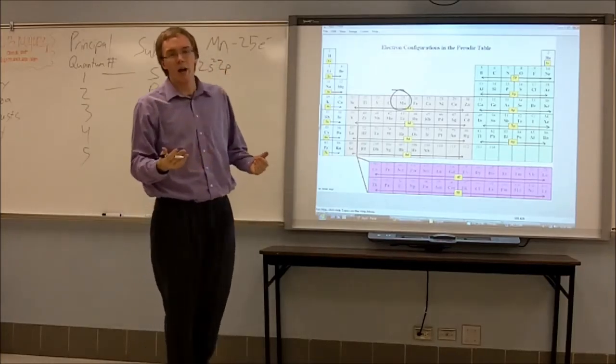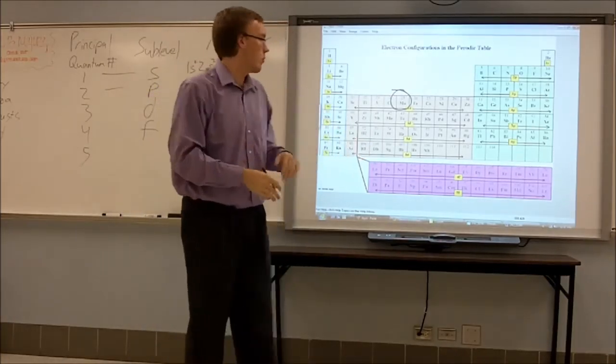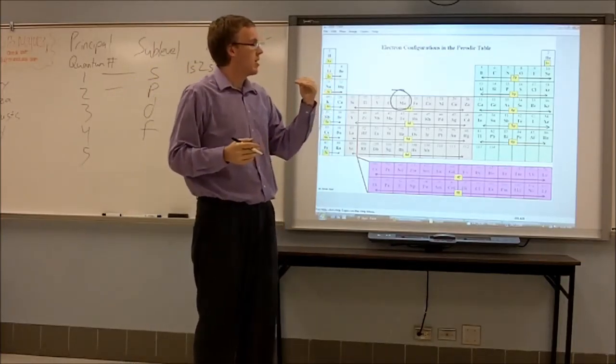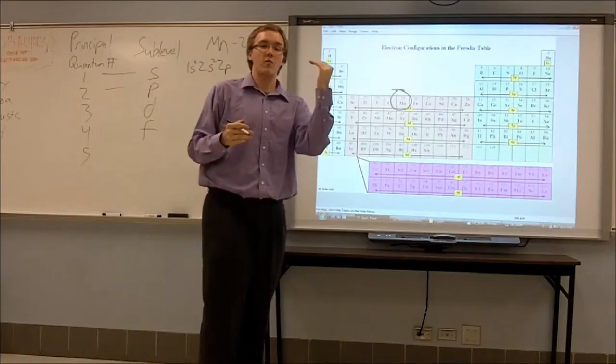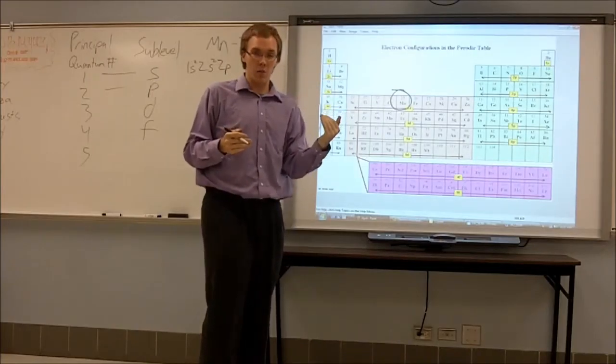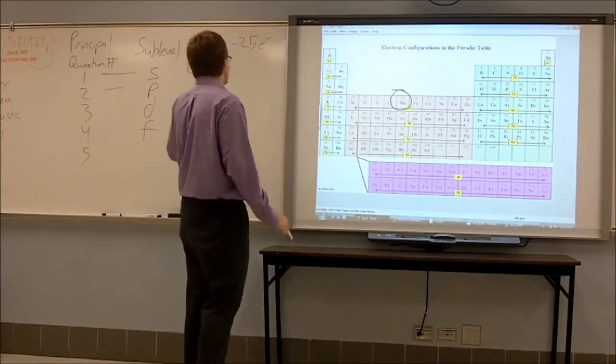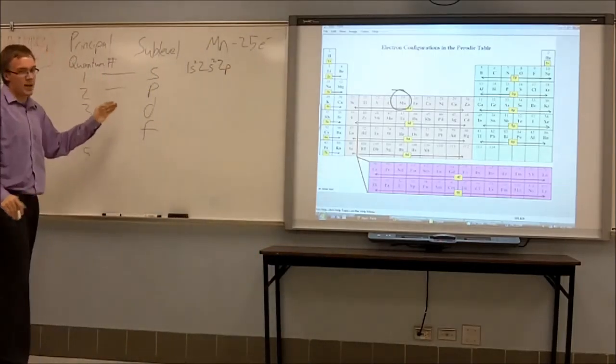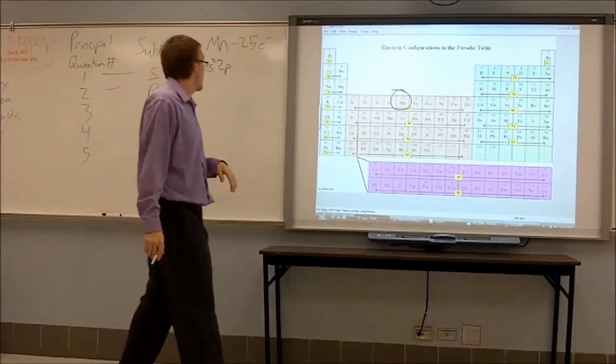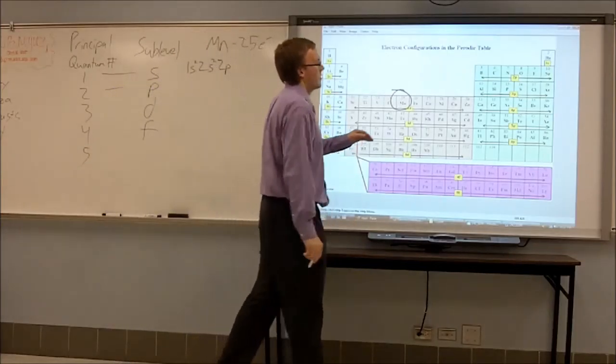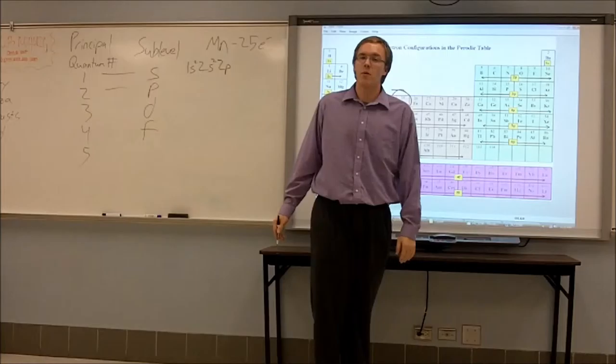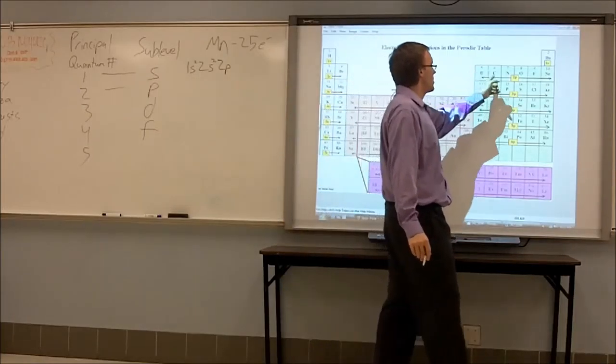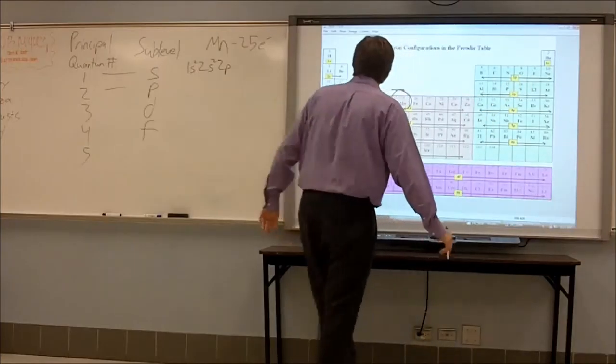Moving over to the right, we hit boron. And boron starts the P group. So we are going to write two P. You might be wondering why we don't write one P. Well, the reason for this is that as you move down a sub-level, you also have moved down a quantum number from the previous one. So since S starts at quantum number one, P starts at quantum number two.